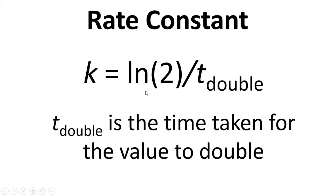You can find k by knowing the time it takes for that process to double. If bacteria were doubling every 20 minutes, then your t double would be 20 minutes, and you could work out the rate constant using this equation.